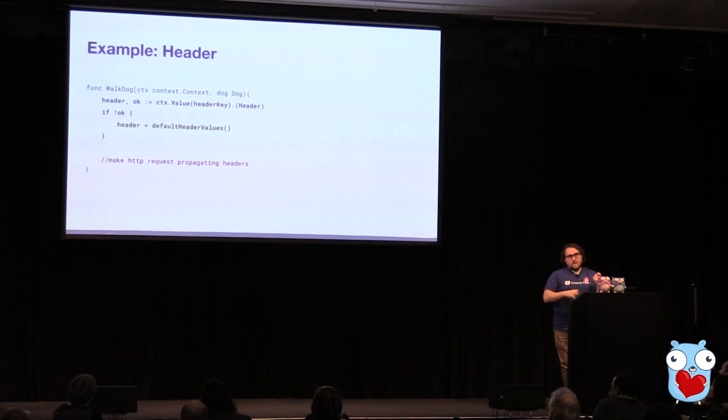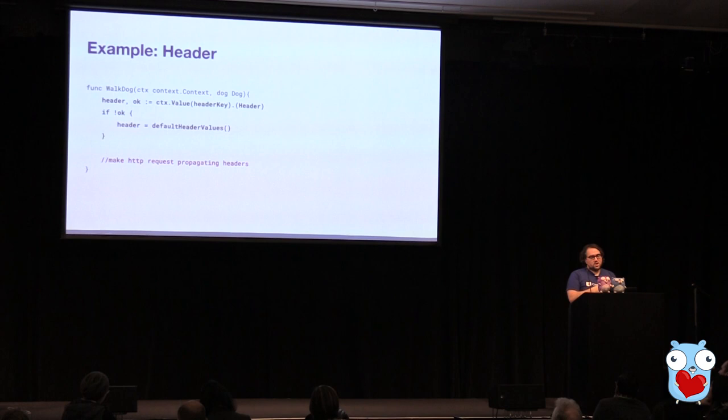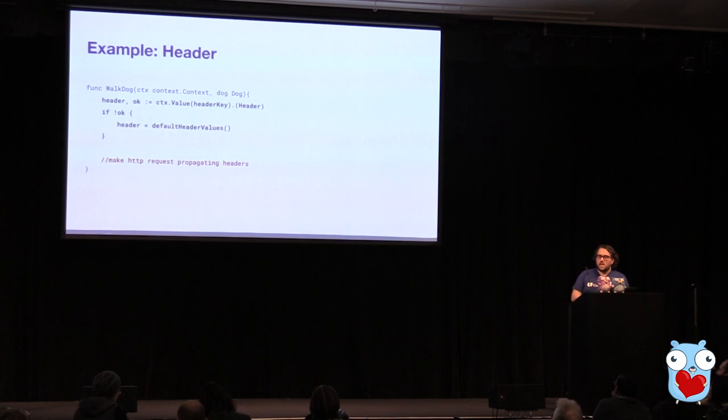Again, this is potentially a lot of cognitive load that you're putting on the caller of your application to understand what to do in that case. The general rule of thumb: if your function shouldn't be dependent on values in context but just supplement with the values that are there — add it to logging, add it to tracing — it's a lot of decision making that needs to happen every time you're interacting with it.